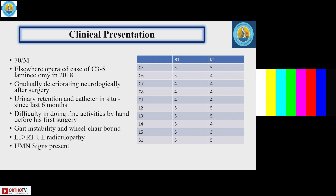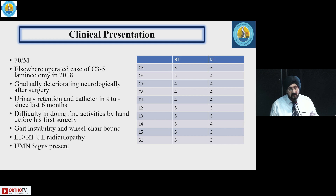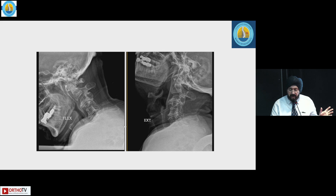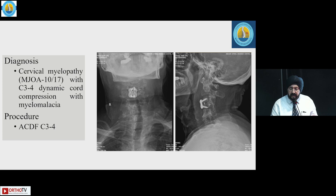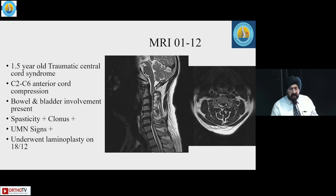A case of C3-5 laminectomy operated elsewhere had gradually deteriorating neurology with bladder involvement, pain, and Hoffman's signs — all signs of myelopathy. CT scan images showed instability, and the desired result was achieved with an anterior cervical discectomy and fusion in this patient.